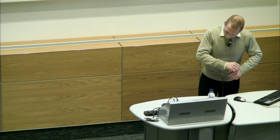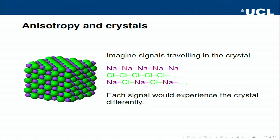To explain what I'm doing, I need to switch to a completely different subject. Consider a sodium chloride crystal — ordinary table salt. It has purple sodium atoms and green chloride atoms forming a crystal. If a signal travels diagonally through this crystal along the sodium atoms, it would have a very different experience than traveling along the chloride atoms or alternating sodium-chloride-sodium-chloride. Each direction gives a different experience.